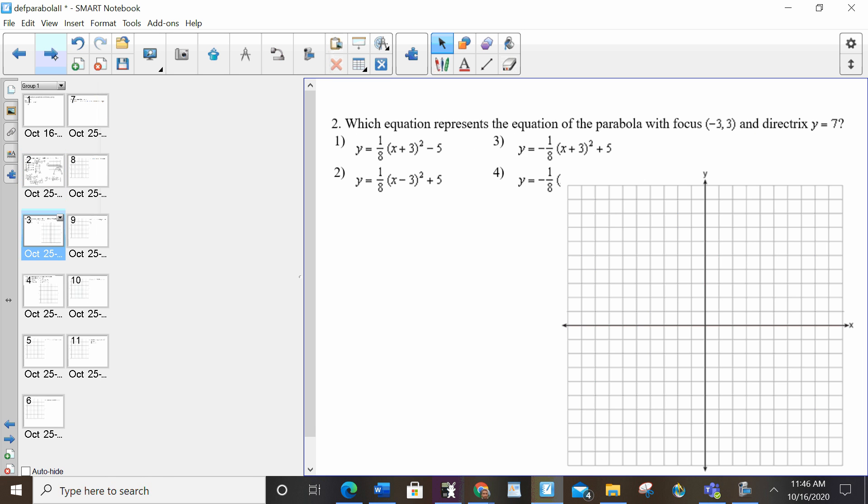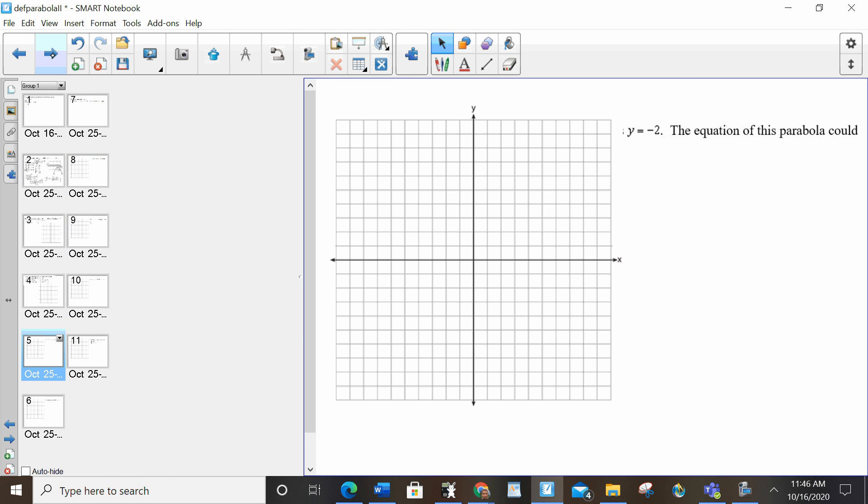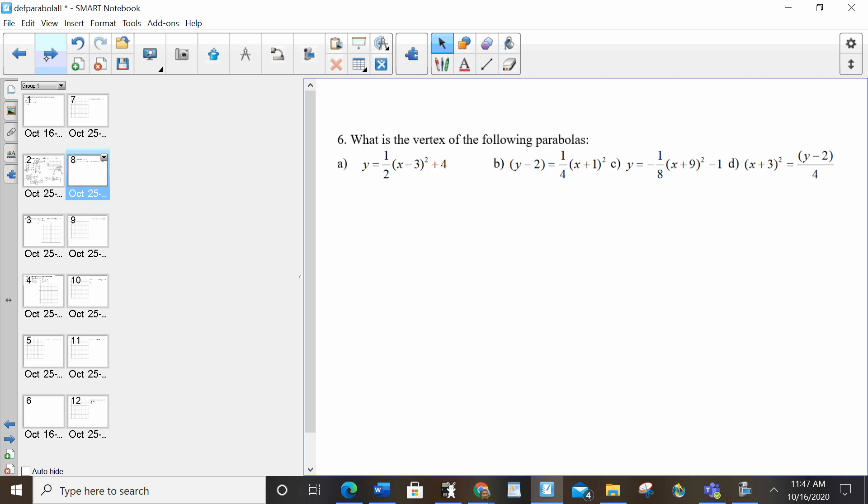So, I want to jump ahead to, all this stuff you can try on your own. This is important. This is going backwards. So, if I give you the equation, I want to pull the vertex out. Because to make the equation, I need the vertex. So, if they give me the equation, I can pull the vertex out.